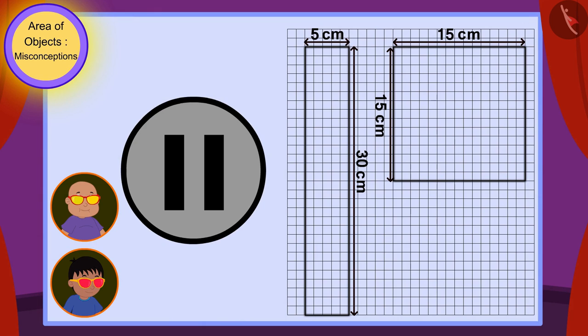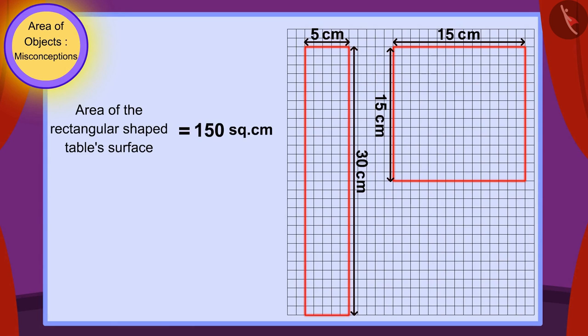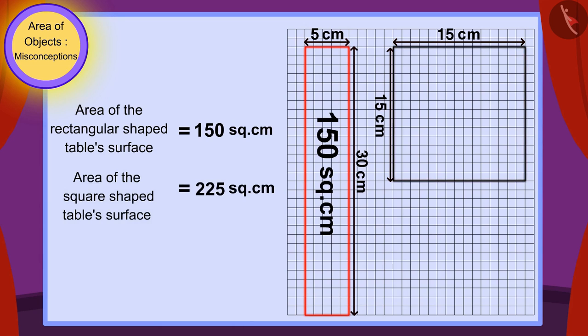There are 150 squares in the surface of the rectangle-shaped table. Or the area of the rectangular table surface is 150 square centimeters. And there are 225 squares in the square-shaped table surface. Or the area of the square-shaped table surface is 225 square centimeters.